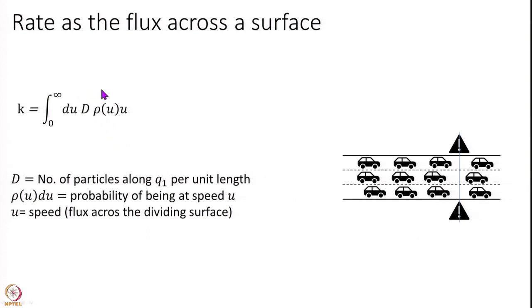This factor d into rho u is the density of cars at speed u. And u here is the speed which is nothing but the flux across my dividing surface, that is the technical language we use. This is what I call as my dividing surface. Dividing surface is nothing but a line that crosses the left to the right. And u is telling me at what rate I am transitioning. And d into rho u gives me the density and if I integrate over all speeds I get the rate constant.